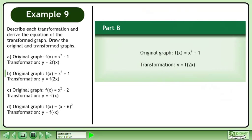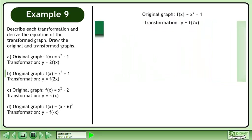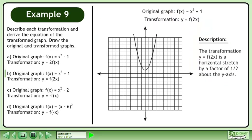In part b, the graph of f of x equals x squared plus 1 is transformed by the equation y equals f of 2x. The transformation y equals f of 2x is a horizontal stretch by a factor of 1 half about the y-axis.